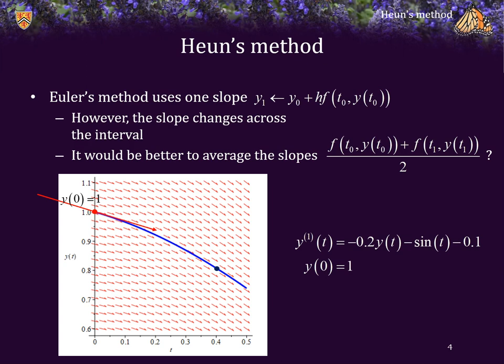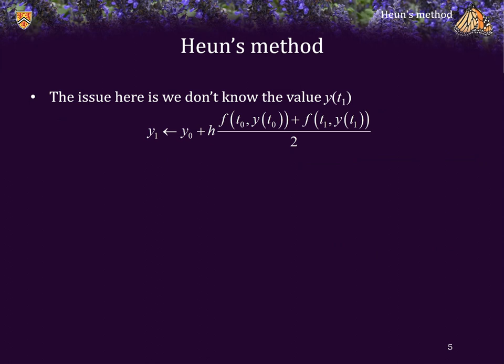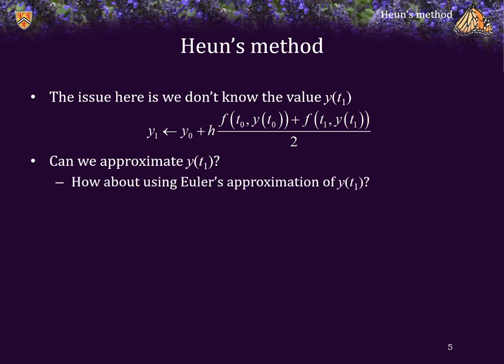Wouldn't it be better if we could average the slopes? We could calculate the slope at the second point, take the average of those two slopes, and then follow that average slope out a distance h. There's only one problem: we don't know what the value of the solution is at y of t-naught plus h. That's what we're trying to find. However, we can approximate y at t sub 1 using Euler's approximation.